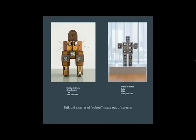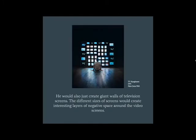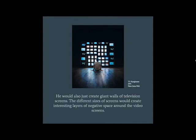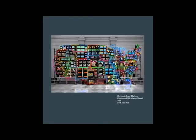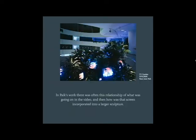Paik did a series of robots made out of screens. He would also create giant walls of television screens, where different sizes of screens would create interesting layers of negative space around the video screens. Here's his piece, Electronic Superhighway — he was actually the first person known to use that expression. In Paik's work, there was often this relationship between what was going on in the video and how that screen was incorporated into a larger sculpture.